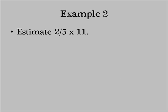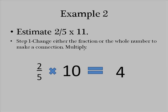Let's try that with another problem. Example 2 says, Estimate 2 fifths times 11. Again I'm looking for a connection. Now 5 and 11 really don't have a connection, but if I change 11 to 10, there is a connection.